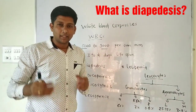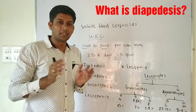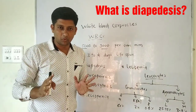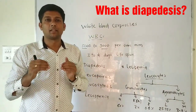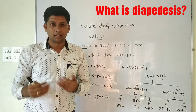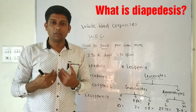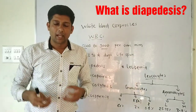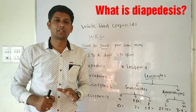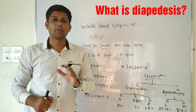WBCs fall under the chapter on circulation. There are two types of circulation: open circulation and closed circulation. In our body, we have a closed circulatory system, which was first discovered by scientist William Harvey.